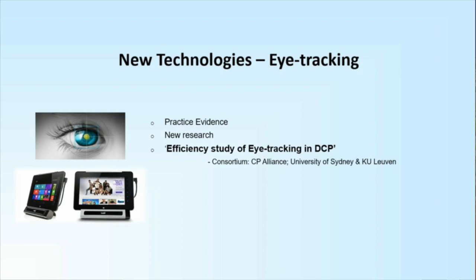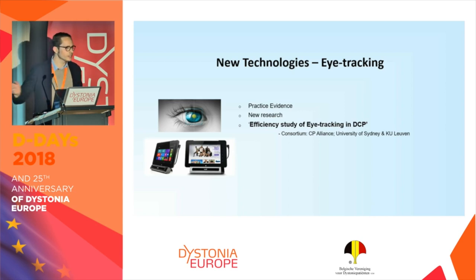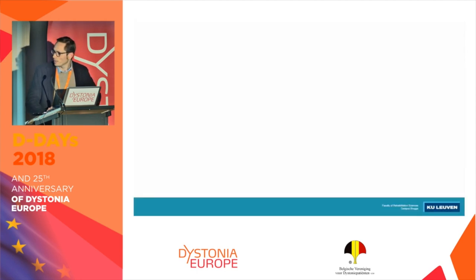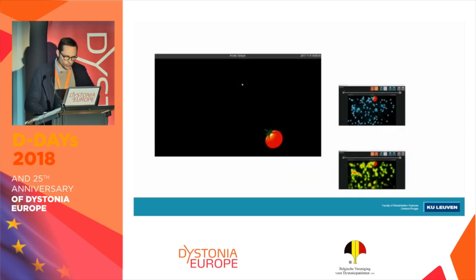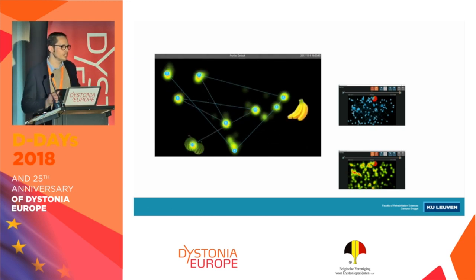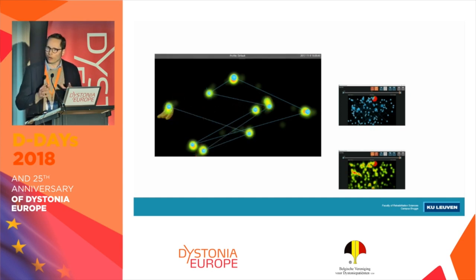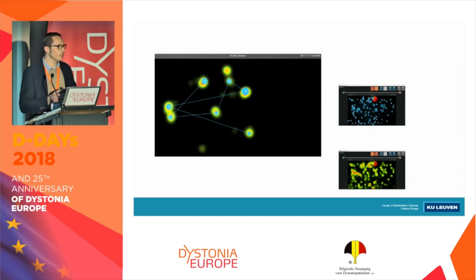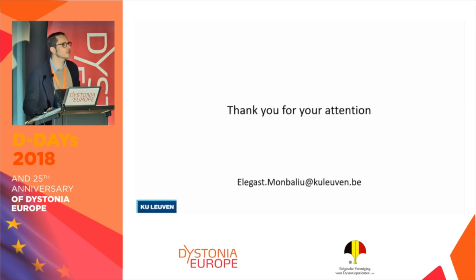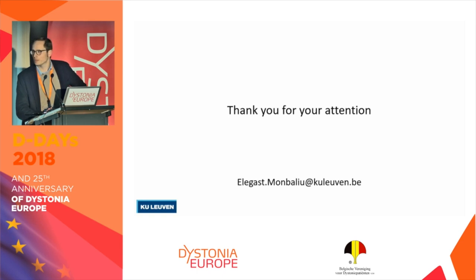This is practical evidence — we know this works. But insurances and policy makers want formal proof. That is why we are running a study right now; data collection is finished and we started data analysis last week, with results hopefully coming next time. We use gaze plots and heat maps to measure success rate, error rate, gaze duration on objects, and number of trials needed. Eye tracking is a window to the world for children with severe dystonic CP. Thank you for your attention.